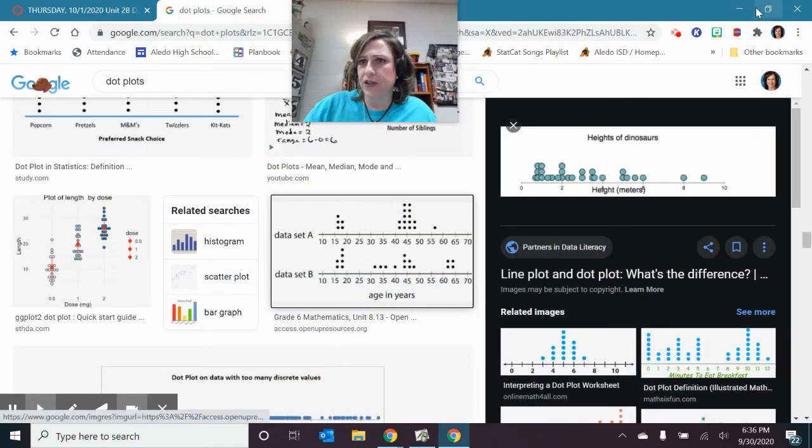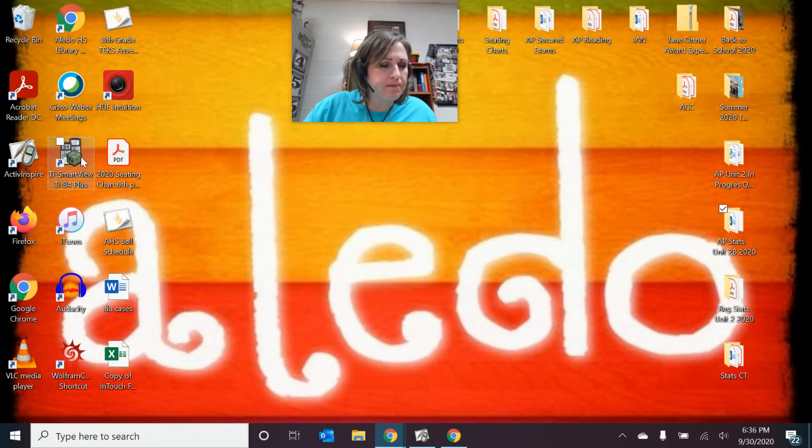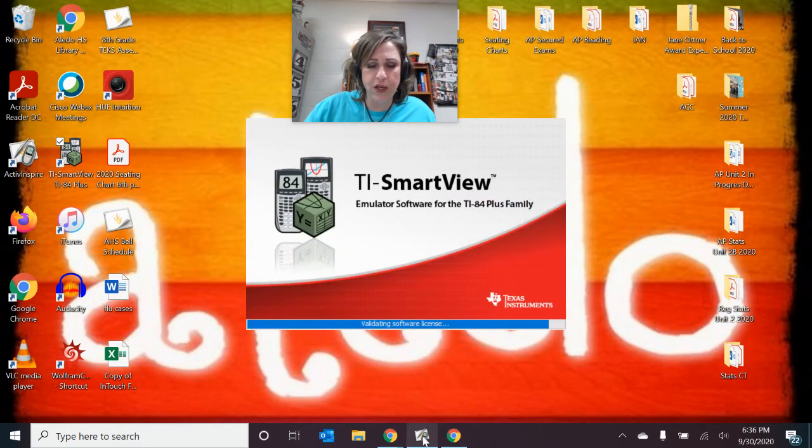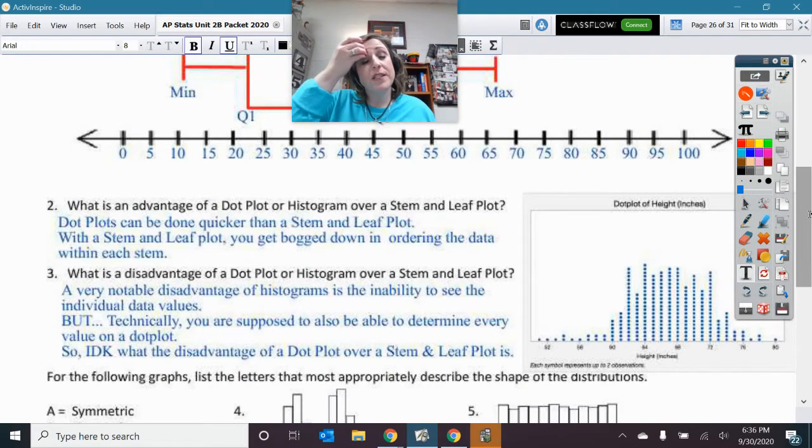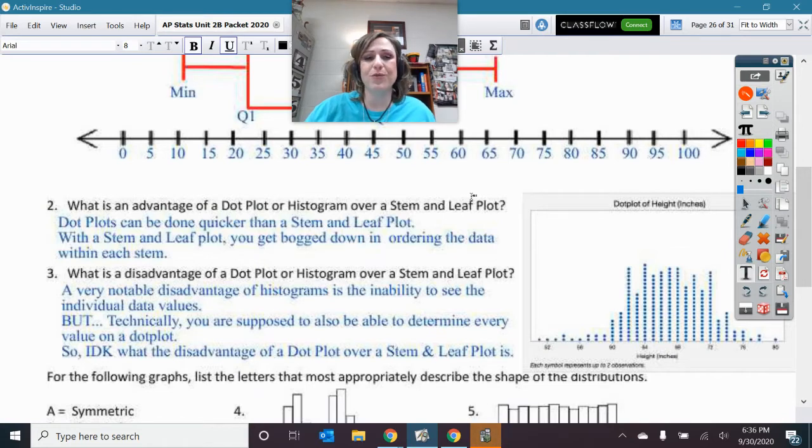All right, let me pull up my calculator just real quick because I wanted to show you something. And so while that's working, we'll keep talking here. All right, so what's an advantage of a dot plot or a histogram over a stem and leaf? Stem and leaf plots, you get bogged down with ordering the data within each stem.